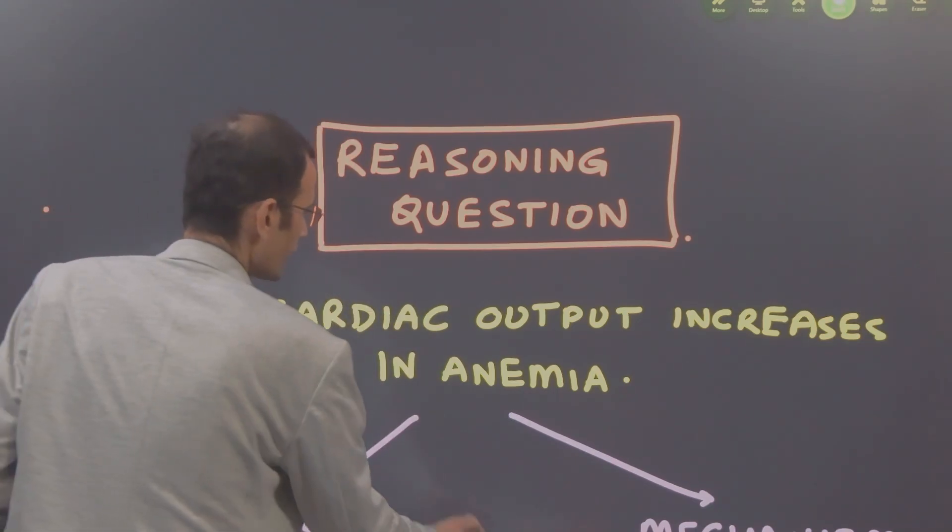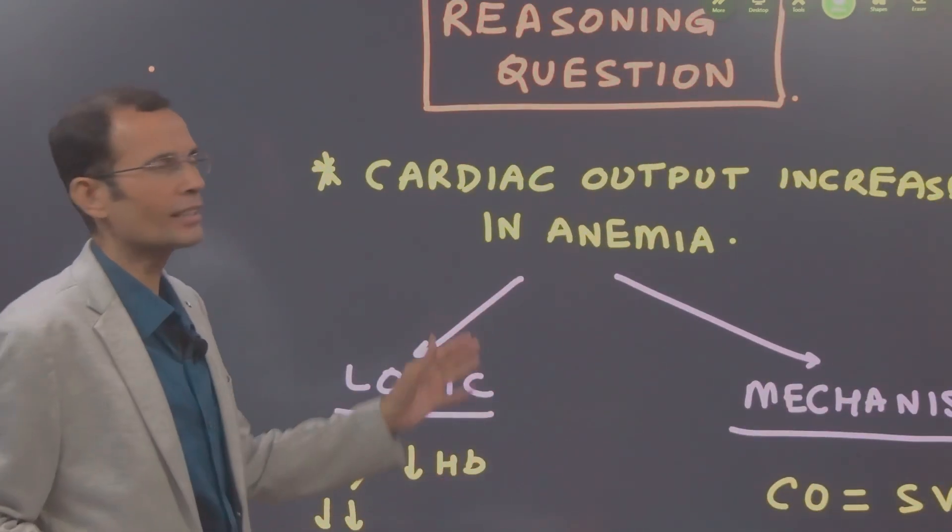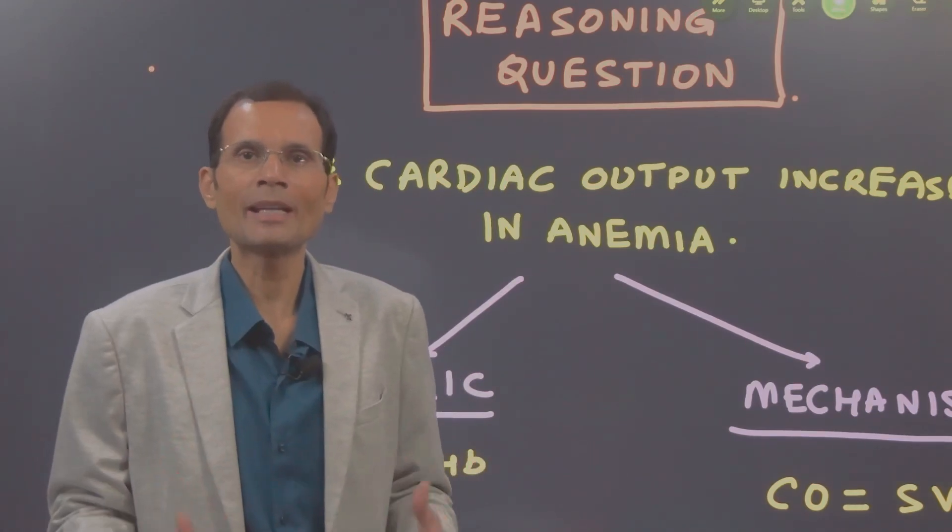Okay, so the question is cardiac output increases in anemia. Explain why.